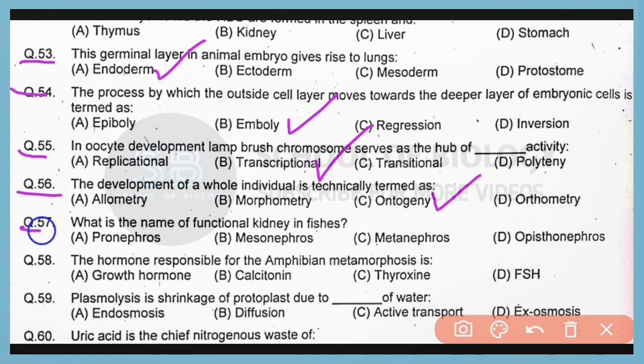Question number 57. What is the name of the functional kidney in fishes? So correct answer is option B. The functional kidney of adult fishes is mesonephrous, while the functional kidney of larval stages of fishes is known as pronephrous kidney.